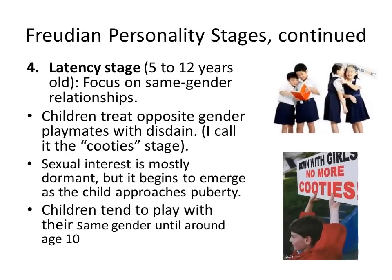In the fourth stage — the latency stage, from ages 5 to 12 — the focus is on same-gender relationships. Children treat opposite-gender playmates with disdain, what I personally call the 'cootie stage,' where 8-year-old boys think all girls have cooties. Sexual interest is mostly dormant but begins to emerge as the child approaches puberty. Children tend to play with their same gender until around age 10, then start to mix and blend a little.